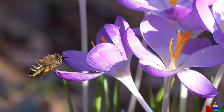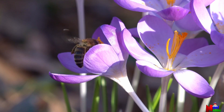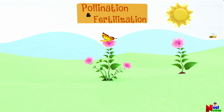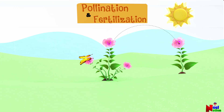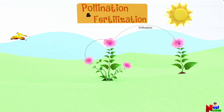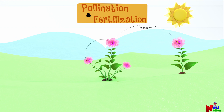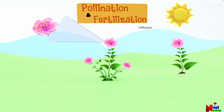Pollination is the process by which pollen from the male part of a flower is transferred to the female part of the same or another flower. Pollination is like a special meeting between two flowers. Pollination is then followed by fertilization. Fertilization is like when a plant has a special hug to make baby seeds.